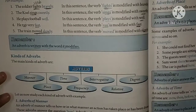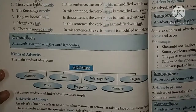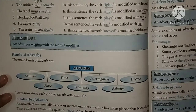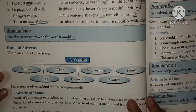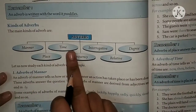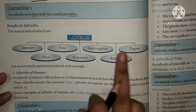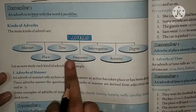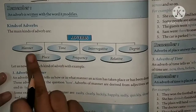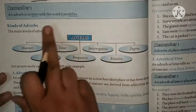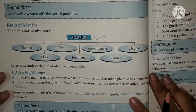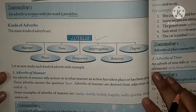Now, there are kinds of adverbs. Let's see how many kinds there are: Manner, Time, Interrogative, Degree, Place, Frequency, and Relative. These all are kinds of adverbs and we will see them one by one.